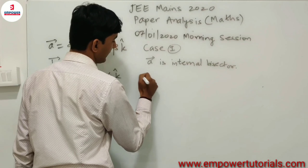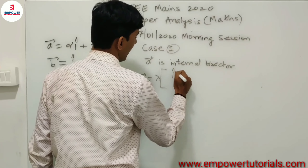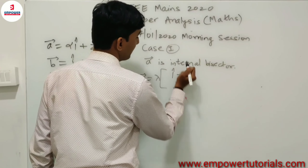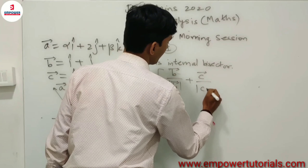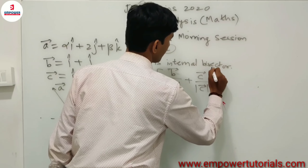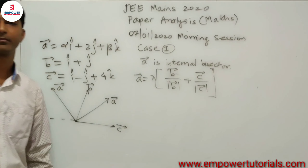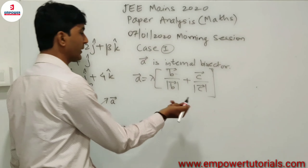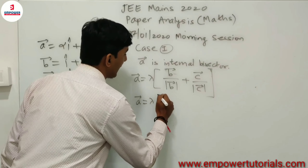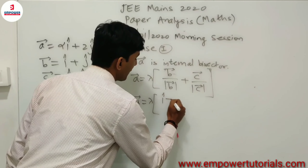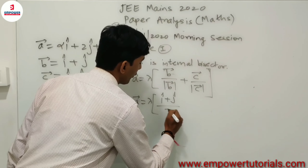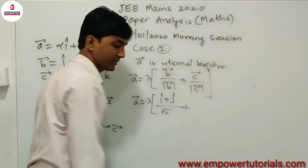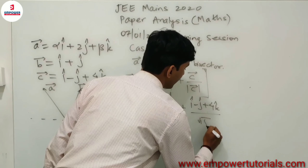For the internal bisector, we can write **a** = λ·(**b**/|**b**| + **c**/|**c**|). Substituting **b** and **c**, we get **a** = λ·(( î + ĵ)/√2 + (î − ĵ + 4k̂)/√18).